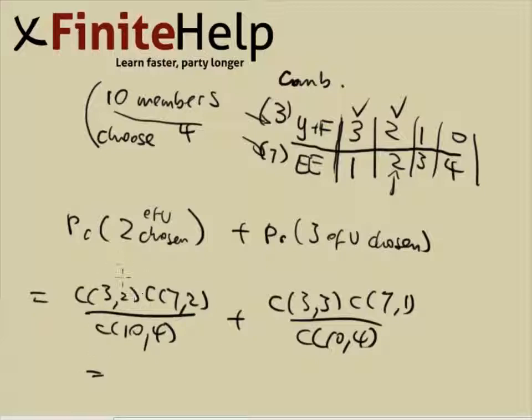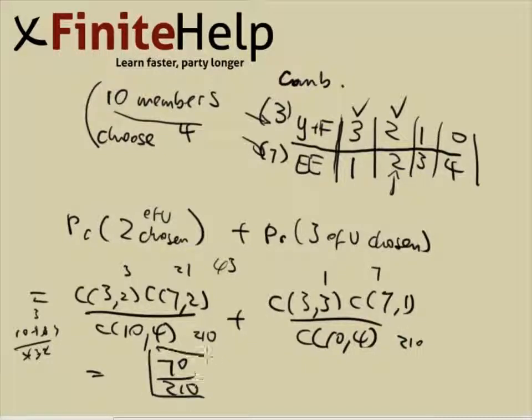You can do the math. Three choose two, seven choose two is going to be 21. Ten choose four, I'm going to have to write that out: 10, 9, 8, 7, 4, 3, 2, 4 and 2. So it's going to be 210. Here's also going to be 210, here's seven and one. Then you multiply them out so three times 21 is 63, and then here is seven, so it's going to be 70, and the bottom is 210. Here's your final answer.